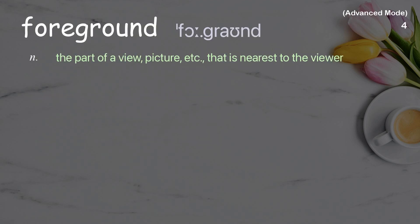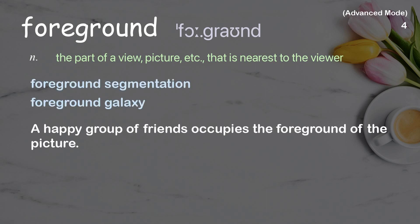Foreground: the part of a view, picture, etc. that is nearest to the viewer. Examples: foreground segmentation; foreground galaxy. A happy group of friends occupies the foreground of the picture.